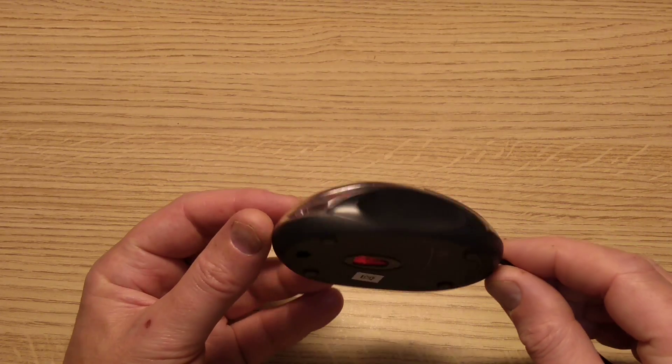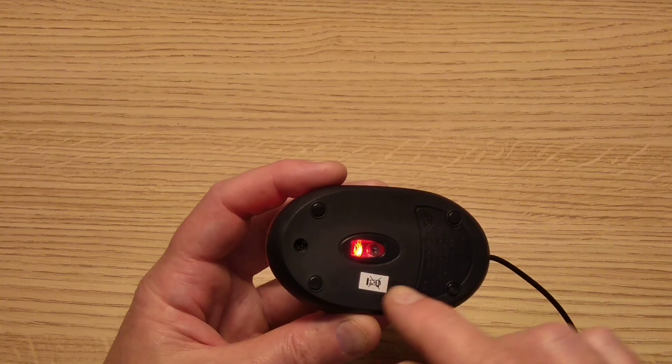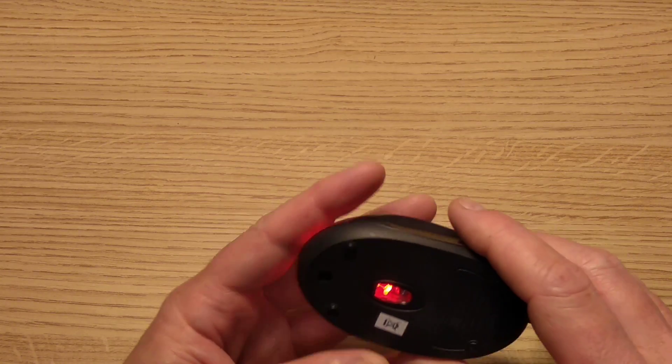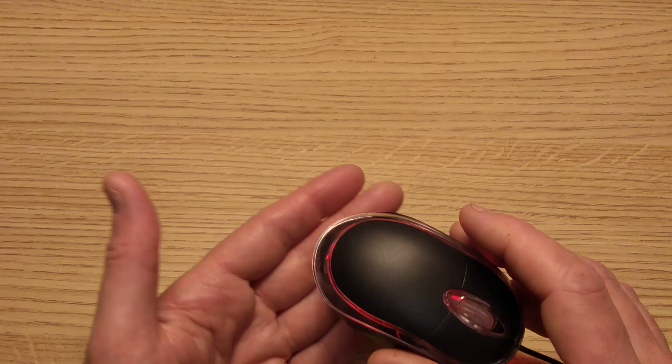The humble computer mouse, something perhaps we take for granted, particularly the optical ones. This one came from Poundland which is even more ridiculous when you realize what's inside.